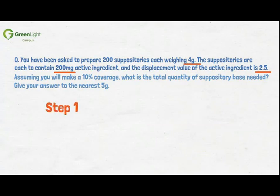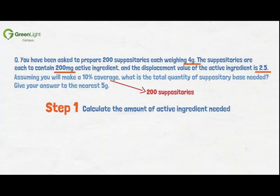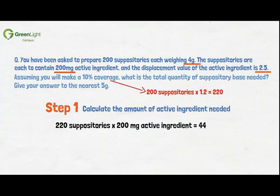The first step is to calculate the total amount of active ingredient needed. You would first need to know how many suppositories you require. You know you need a 10% overage, so the total quantity of suppositories needed for this batch is 220. Therefore, 220 suppositories times 200 mg of active ingredient gives you 44,000 mg, which is the same as 44 grams.